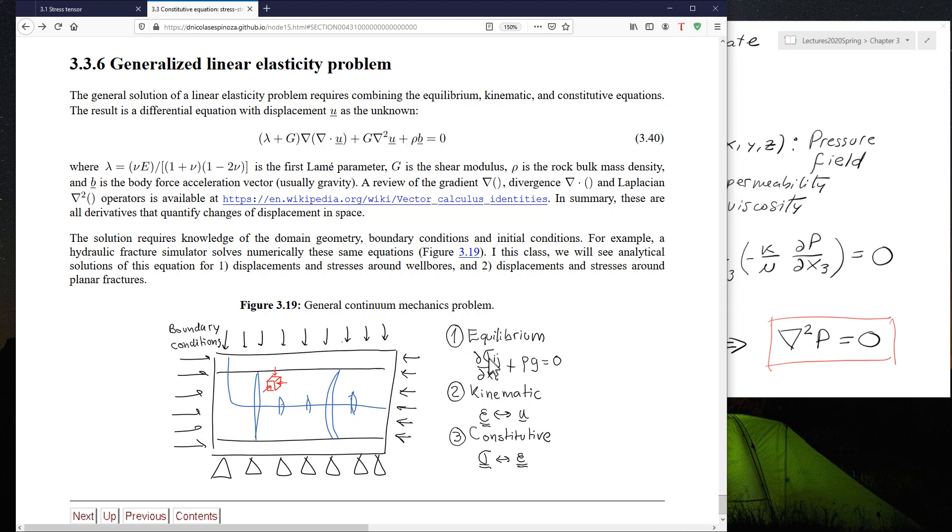And then you can find how to get to this equation. Notice that here you have a sigma, but the sigmas are a function of the strains. So here you're going to have a function of a strain, but the strains are a function of displacements. So at the end of the day, you're going to find that this equation, it can be written as a function of displacements.